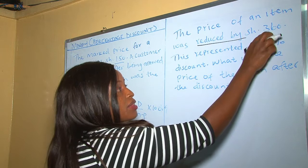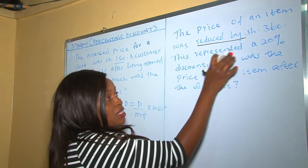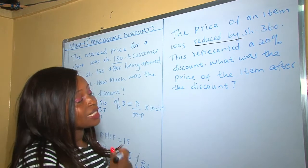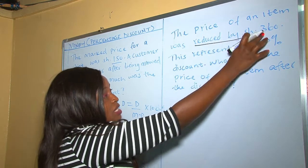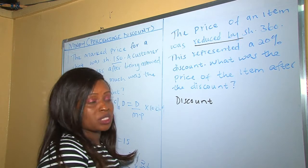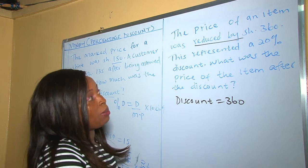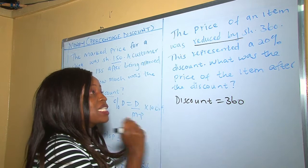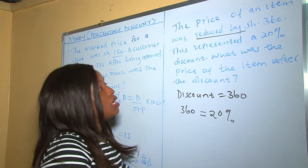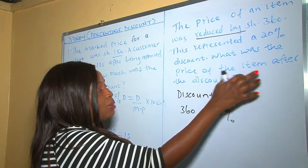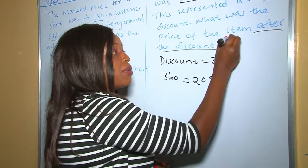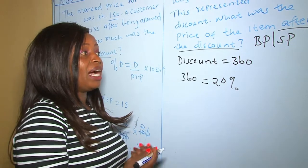In this example, the price of an item was reduced by 360 shillings, which represents a 20% discount. What was the price of the item after the discount? The reduction of 360 shillings is our discount. We are told this 360 represents a 20% discount, so 360 is equivalent to 20%. The price after the discount is the buying price or selling price.